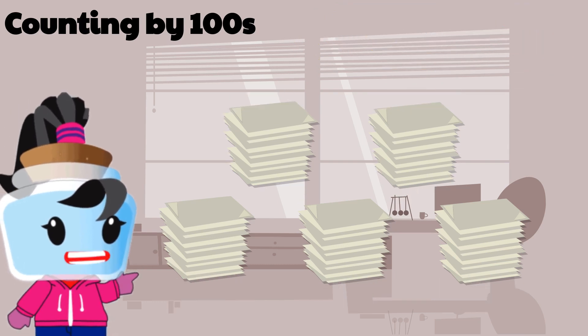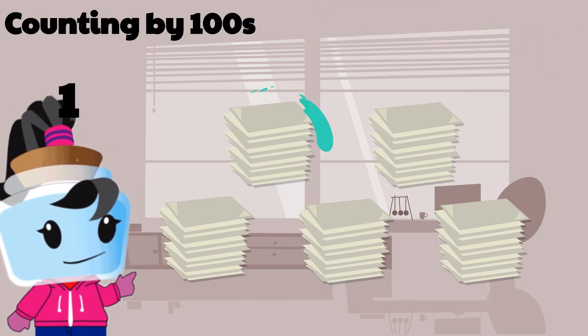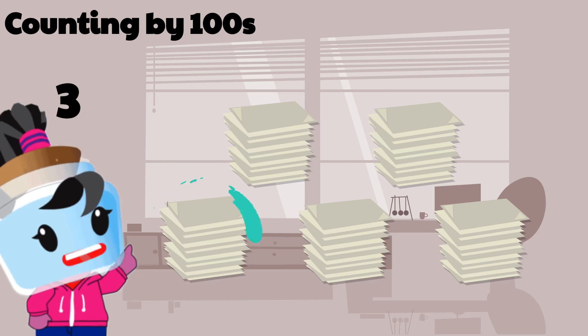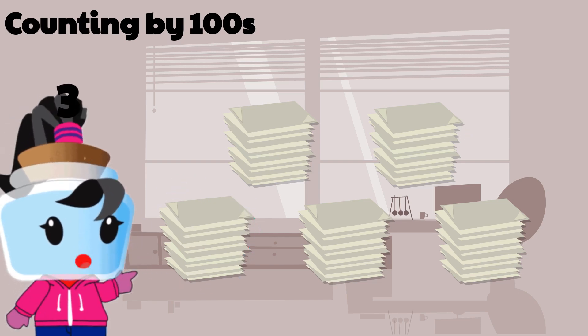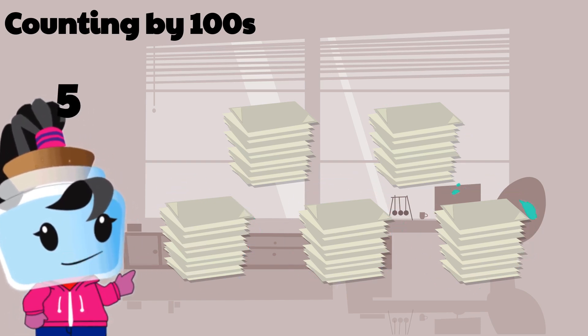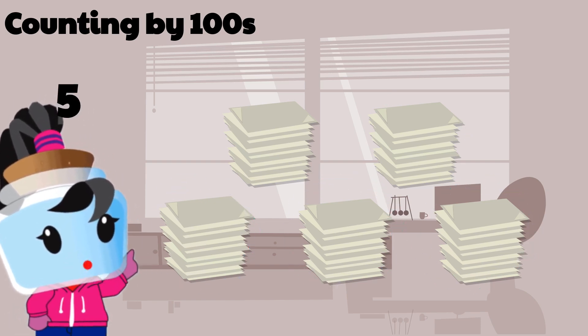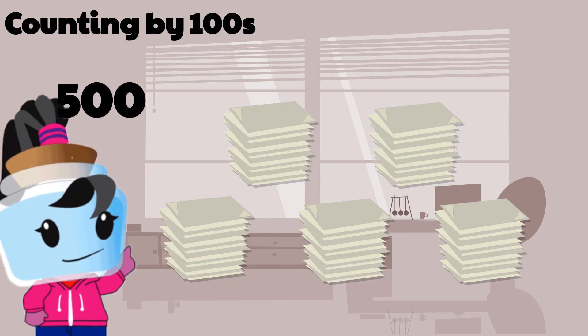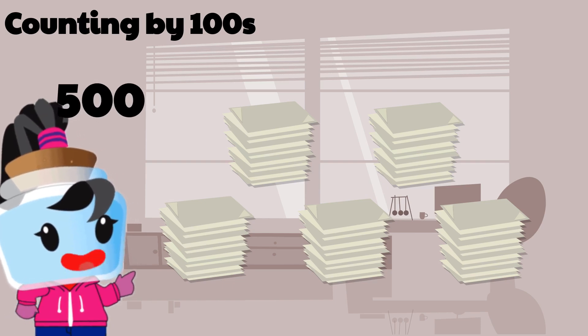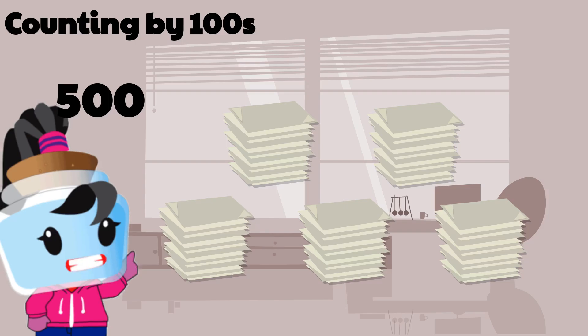If you look at it, we have one, two, three, four, and five as the first digits, then two zeros are simply added at the end of each of them.